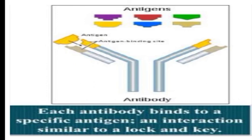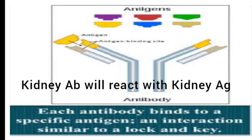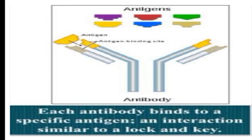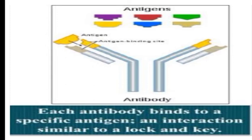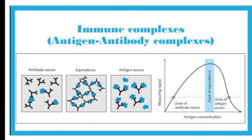Specificity refers to the ability of an individual antibody combining site to react with only one antigenic determinant, or the ability of a population of antibodies to react with only one antigen. For example, an antibody produced against kidney antigen will react only with kidney antigen, and an antibody produced against lens antigen will react only with lens antigen. A standard lock can be opened by its own key only — similarly, one antibody can react with its own antigen.